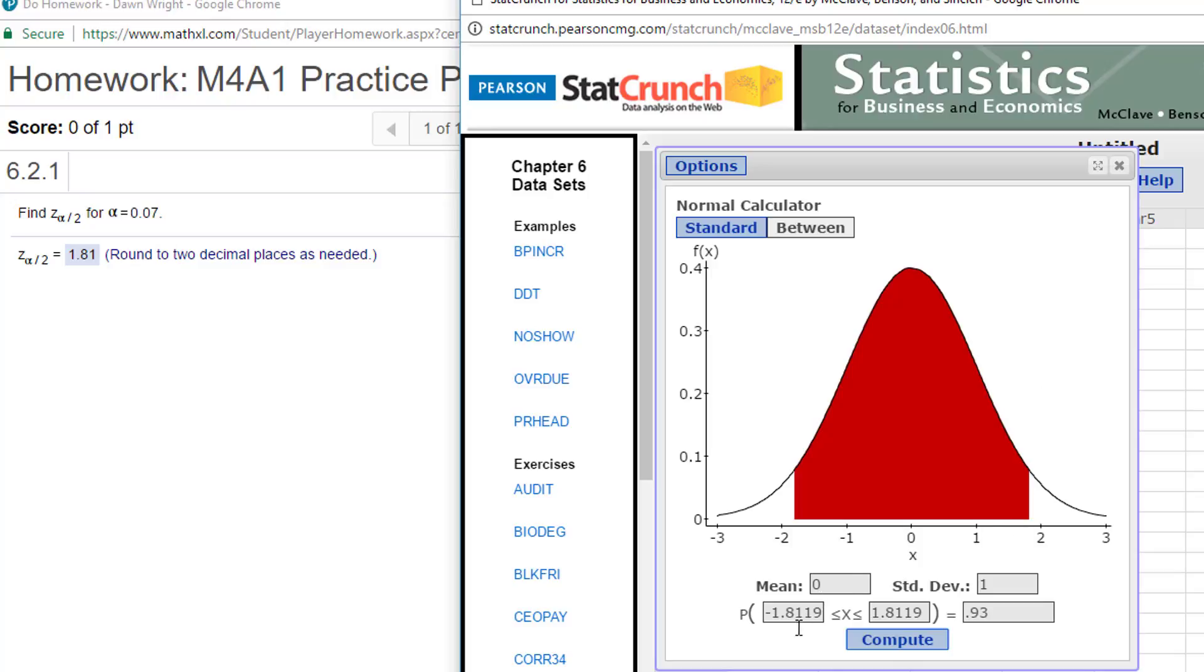And I get the correct answer again, 1.81 and minus 1.81 for my values of Z for alpha over 2.